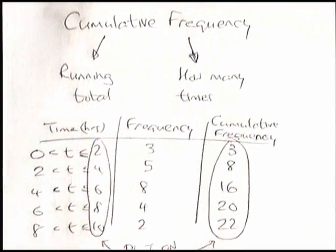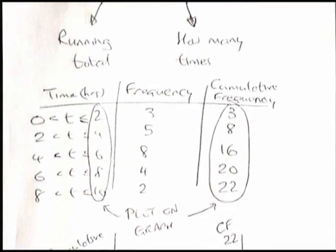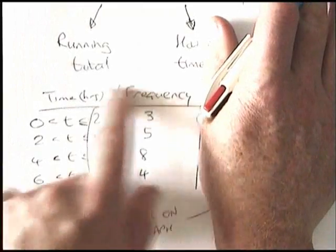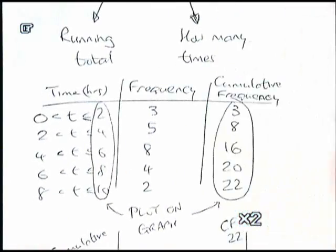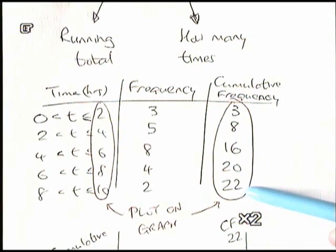So what I want to do now is a very quick recap of what we've done. We started with a grouped frequency table here, and from the grouped frequency table we worked out our cumulative frequency values. They were just a running total of these numbers.